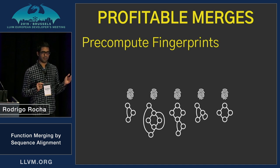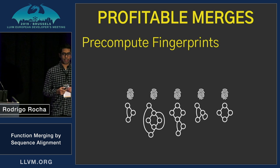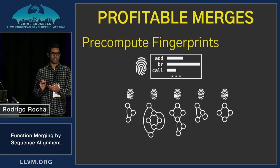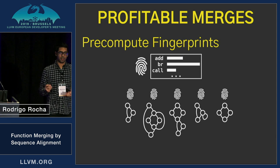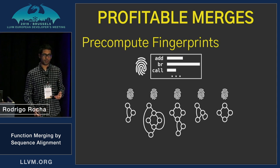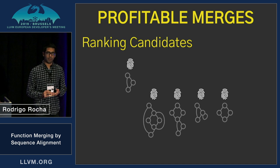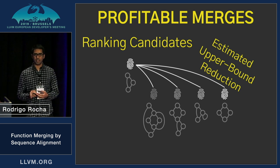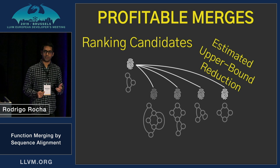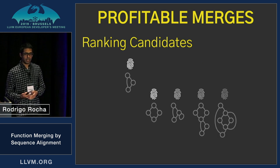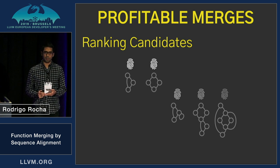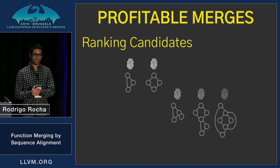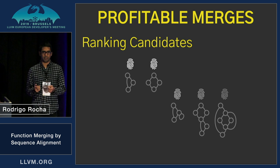We first perform a very lightweight pass over the functions, pre-computing these fingerprints. These fingerprints are something like a summary — for example, we have five additions, ten branches, and so on. Based on this fingerprint for each function, we rank all other functions and then select the top candidate. This rank is based on an estimate of the upper bound of how many instructions you can merge. When we have this rank, we select the top candidate and perform the merge operation only with that candidate. This ranking operation is very lightweight because we only take the fingerprint, and the number of opcodes is constant.